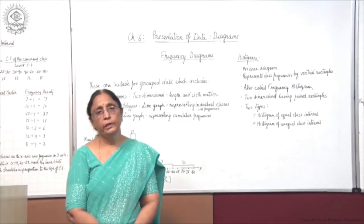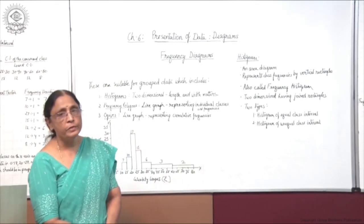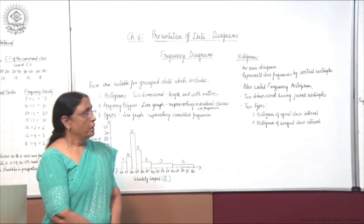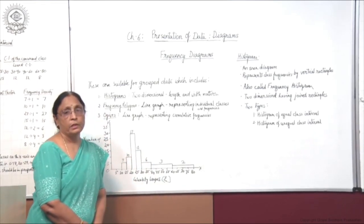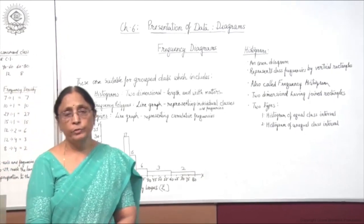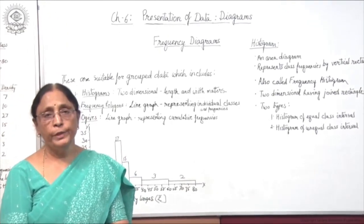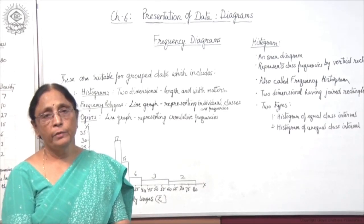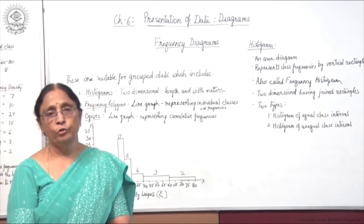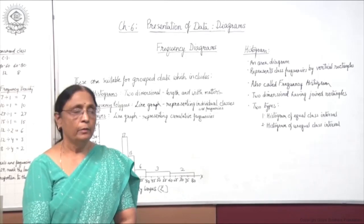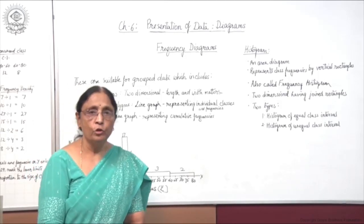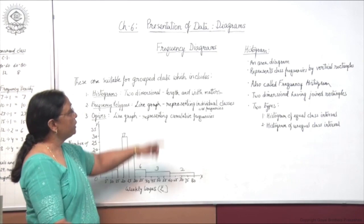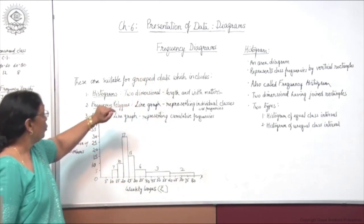Children, now we will move to another type of diagrams, that is frequency diagrams. Frequency diagrams are more suitable where grouped data is given. In the case of ungrouped data, bar diagrams are more suitable because there is no frequency given along with it, but in the case of grouped data when the frequency is given, then frequency diagrams are more suitable.